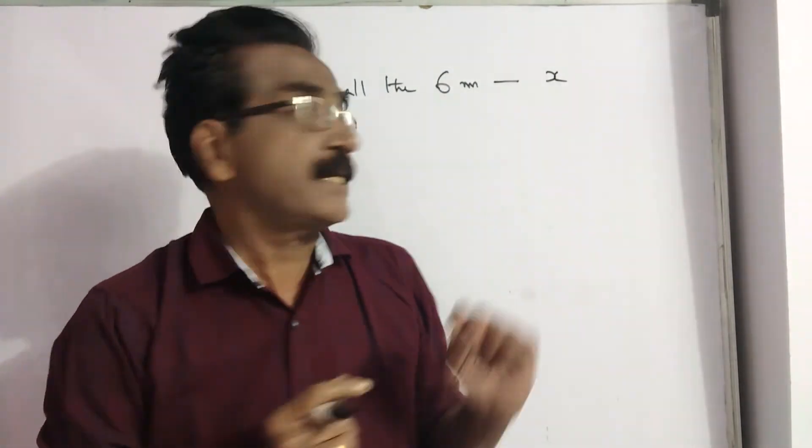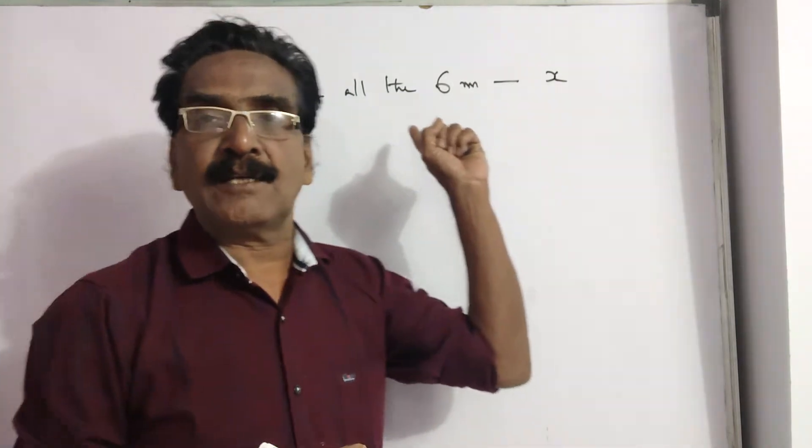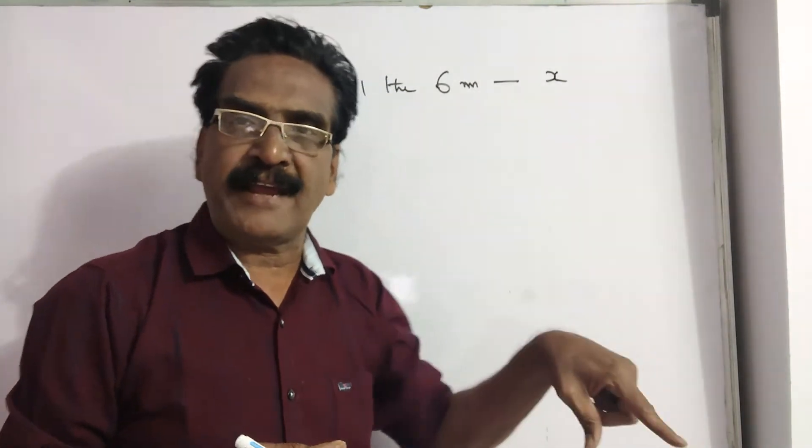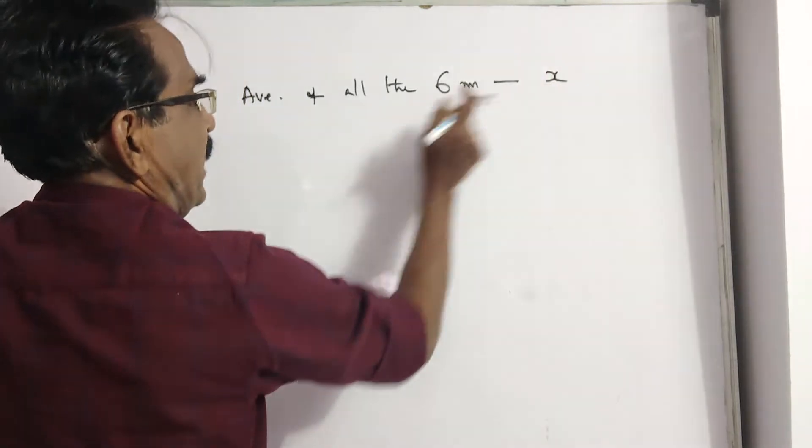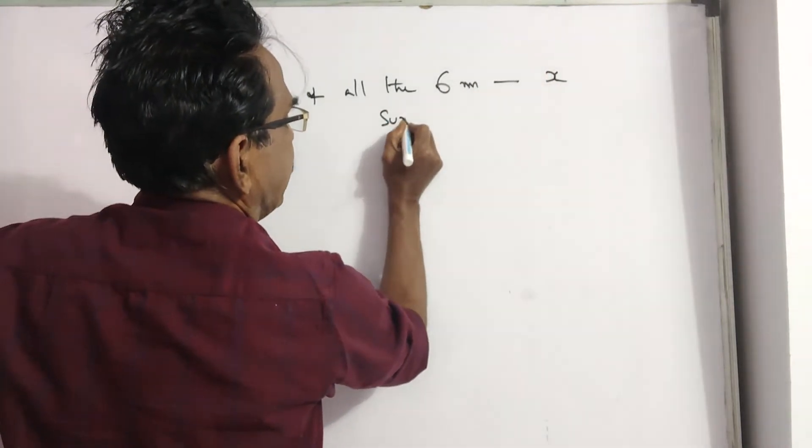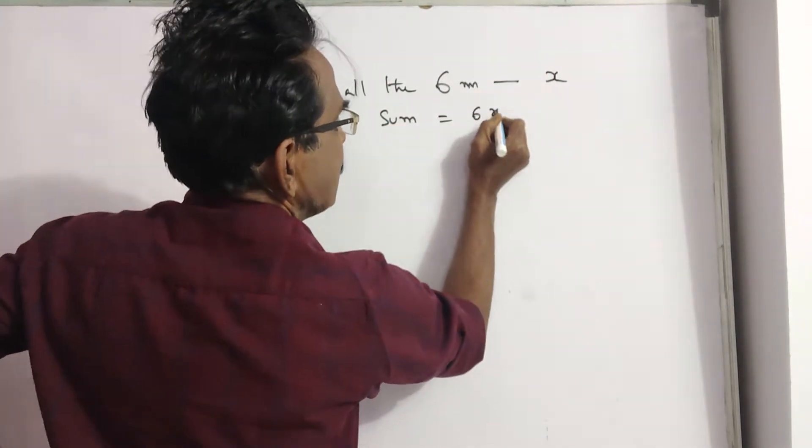That is 10 years ago, the average age of all the 6 members including wife, say X. So, this is average. Then sum will be sum is equal to 6X.